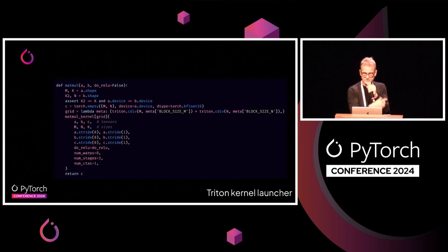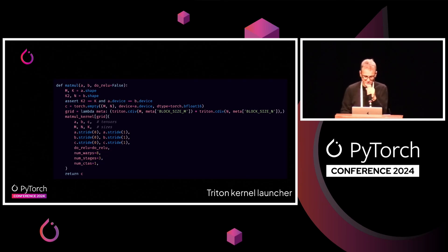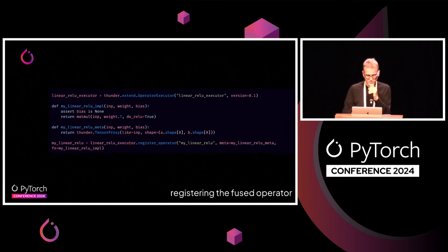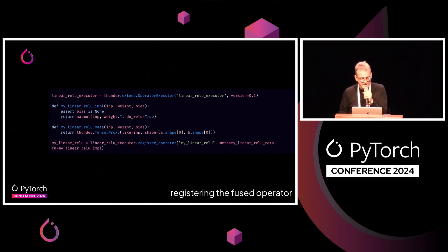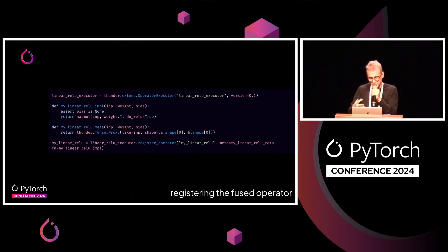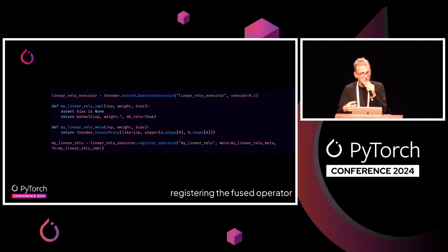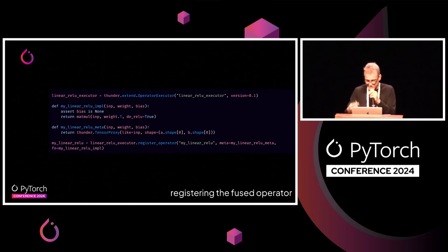Then we need a driver function or launcher for the Triton kernel — it's just a Python function that takes the tensors as input and runs the kernel in a certain grid. Thunder allows you to extend its executors really easily. So right now we are defining a new executor at the top — we're going to call it linear ReLU executor — and then we have an implementation of that; we call the launcher function defined at the previous slide. We also define a meta function, and the meta function informs Thunder of what it does to a tensor: in this case it produces a tensor like the input with a given shape. This informs Thunder all the things it needs to know to symbolically analyze the shape. Then we register that operator in the executor, my linear ReLU.